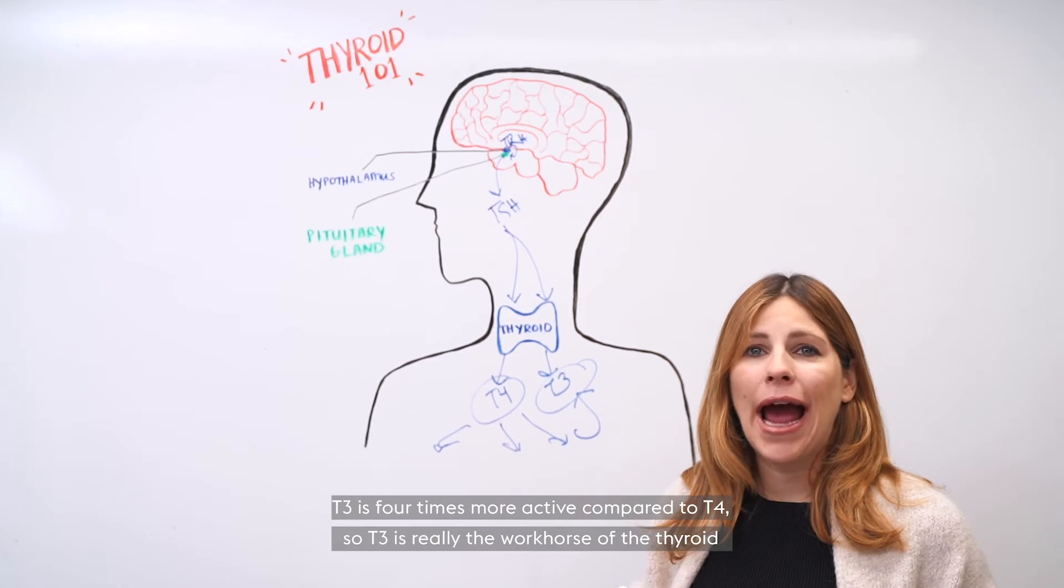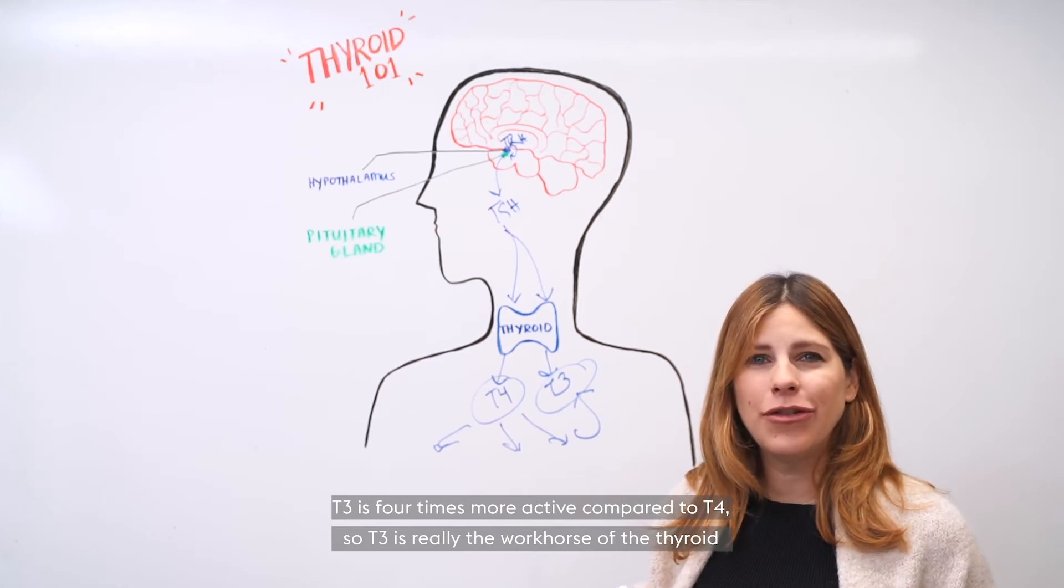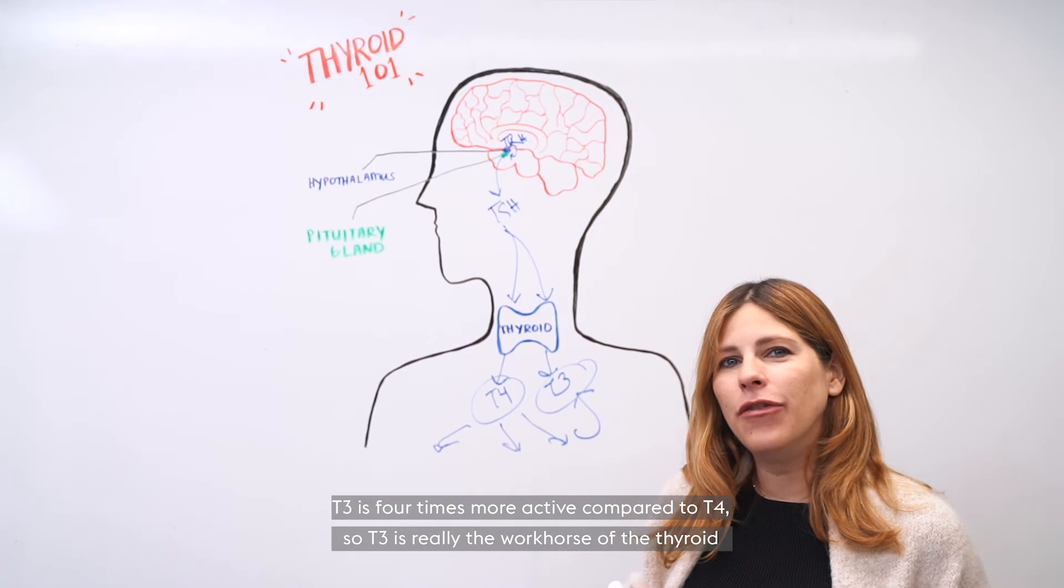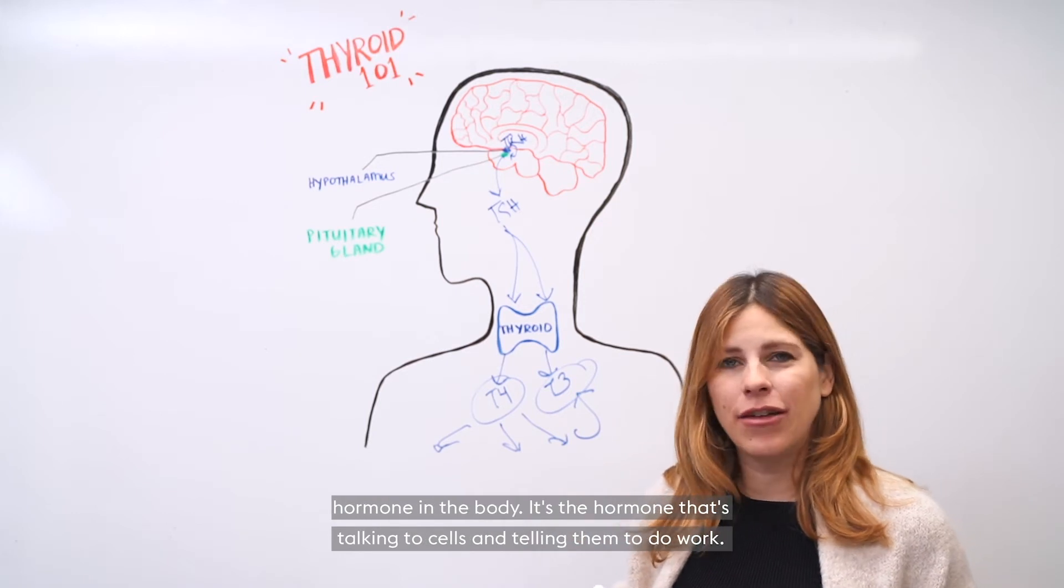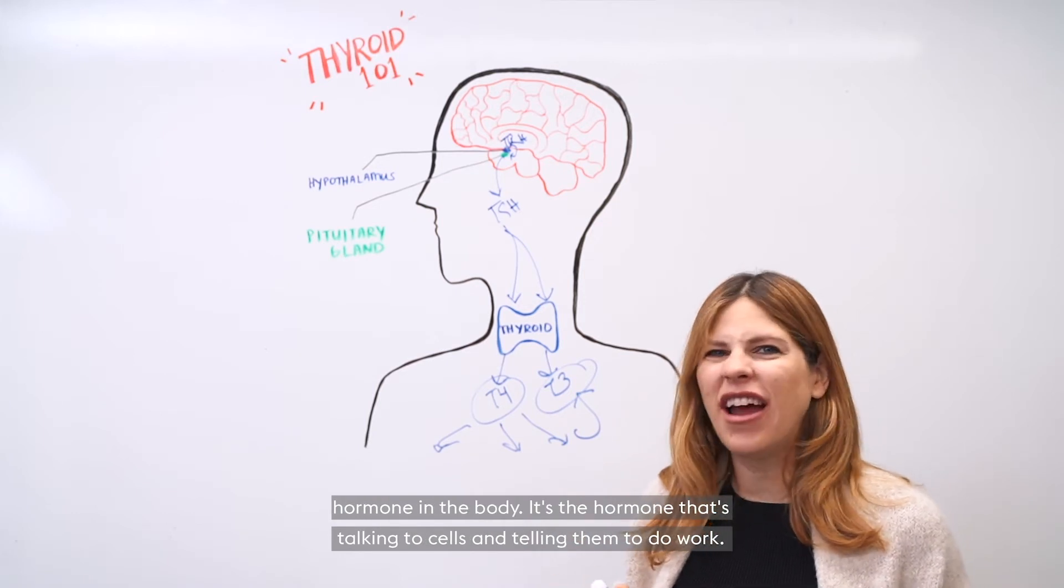T3 is four times more active compared to T4. So T3 is really the workhorse of the thyroid hormone in the body. It's the hormone that's talking to cells and telling them to do work.